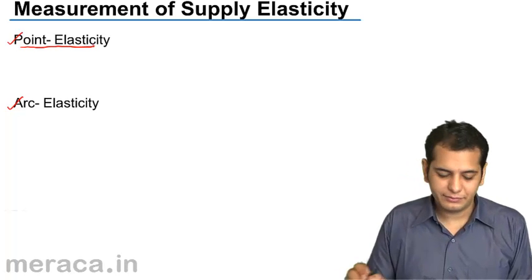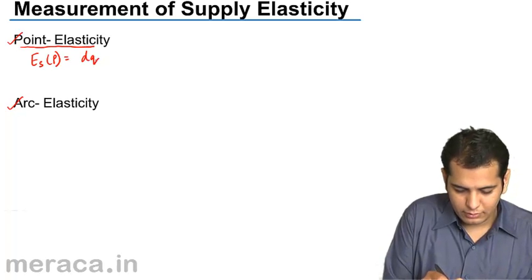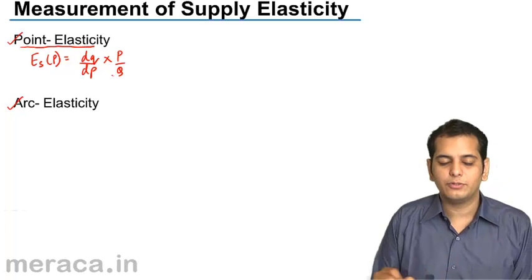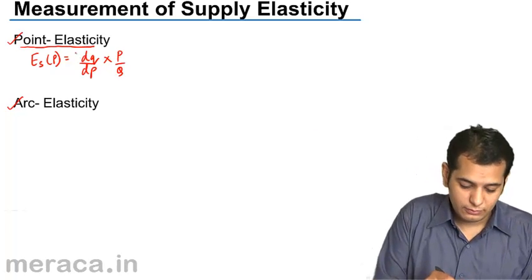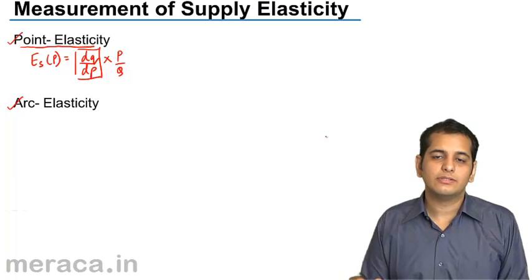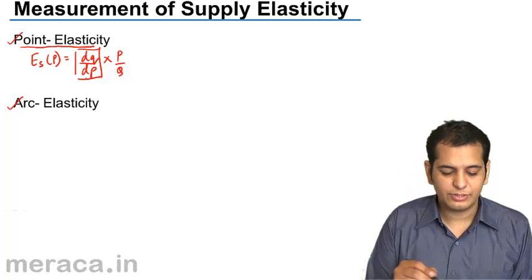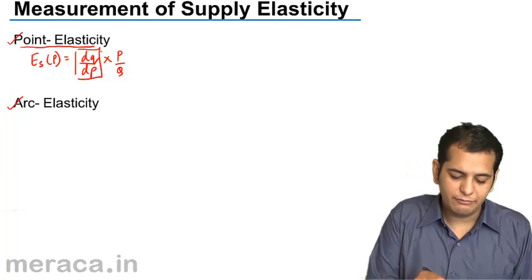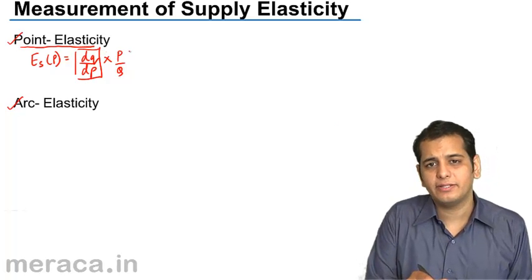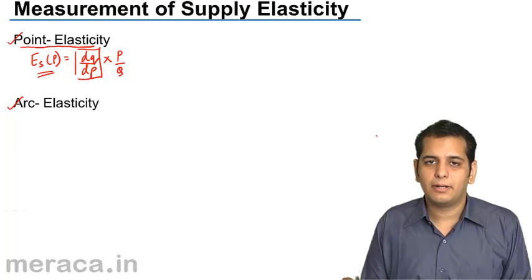Point elasticity of supply can be calculated with the formula dQ/dP times P/Q. This dQ/dP is a coefficient, is a constant, and in exams if they ask you to calculate the elasticity of supply by point method, they'll always give you this constant. So you have this constant, you have the price at that point, you have the quantity at that point. You can easily calculate the elasticity of supply by point method.